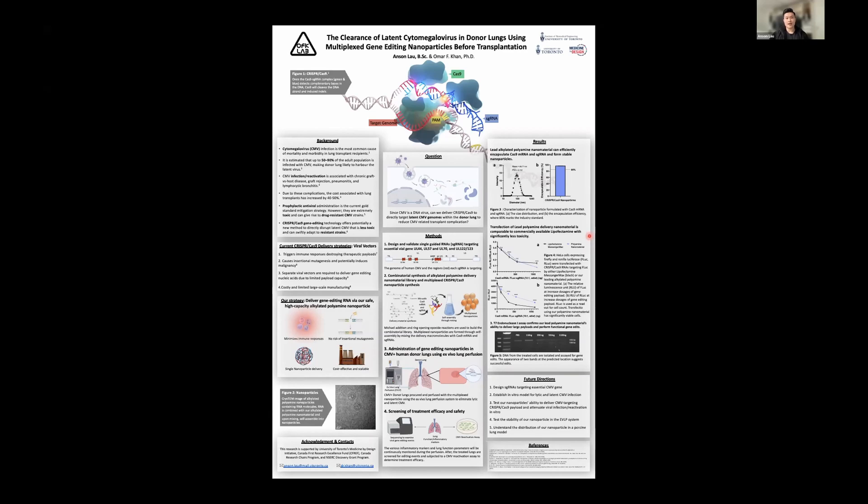So, so far, our lead alkylated poly-nanomaterial have shown to efficiently encapsulate Cas9 mRNA and sgRNA and form stable nanoparticles with low polydispersity index, as you can see in figure A and figure B. Our nanoparticles here in figure 4A in blue was also able to transfect cells in vitro and perform functional gene knockout, comparable to commercially transfection agent lipofectamine in black here. As you can see, both trends are quite similar in figure 4A.